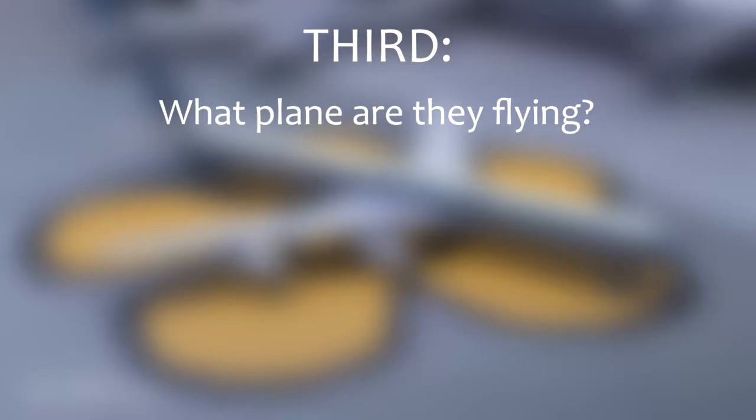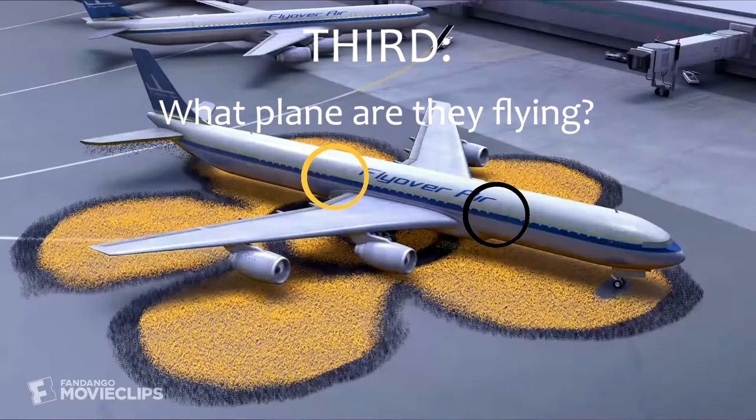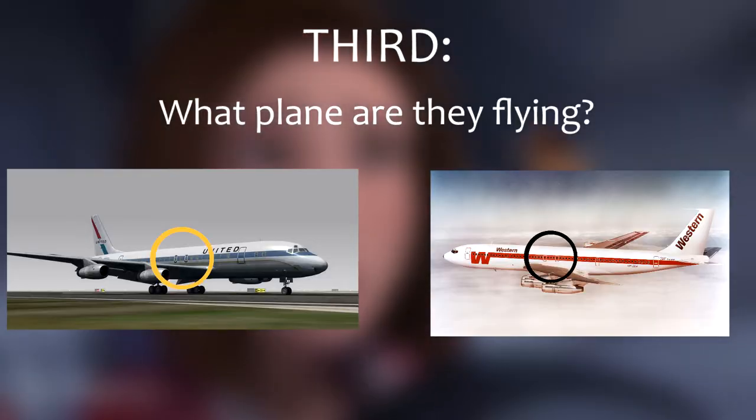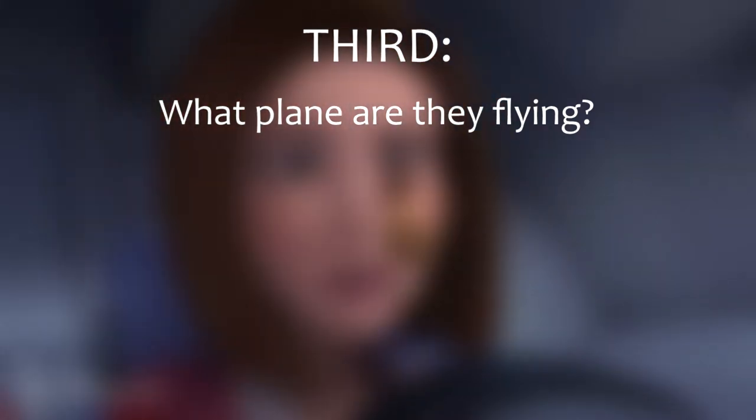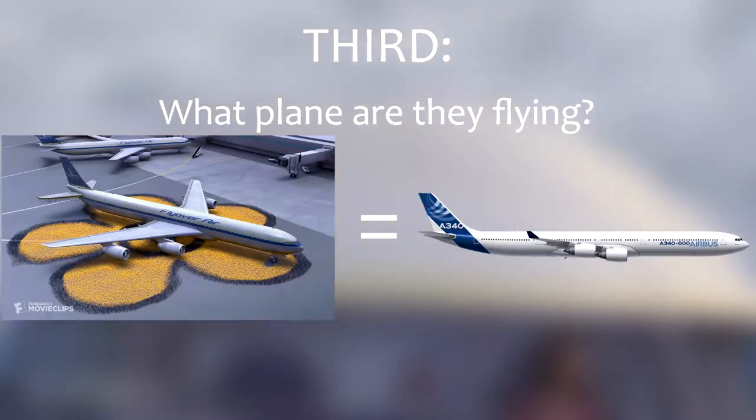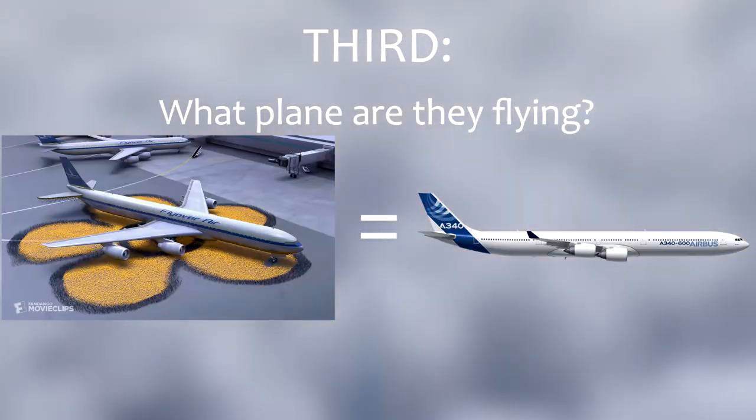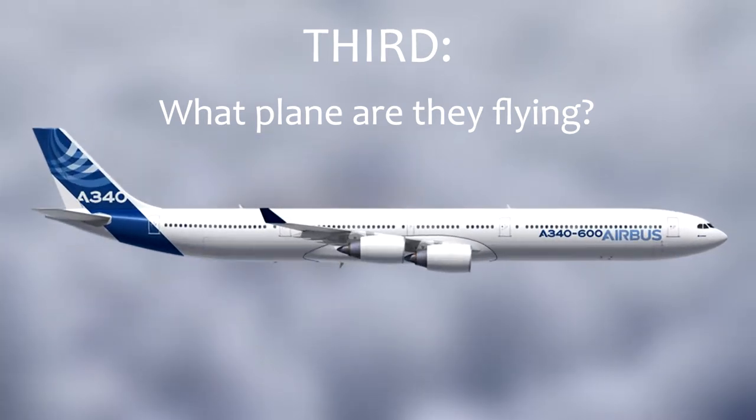We can rule out the Douglas DC-8 and the Boeing 707 because the plane in Bee Movie has doors which are not over the wing, whereas the DC-8 and 707 both have doors which exit over the wing. This means that the plane in the film is most likely the Airbus A340, or at least is modelled after it, so we will use this plane for the real-world measurements.